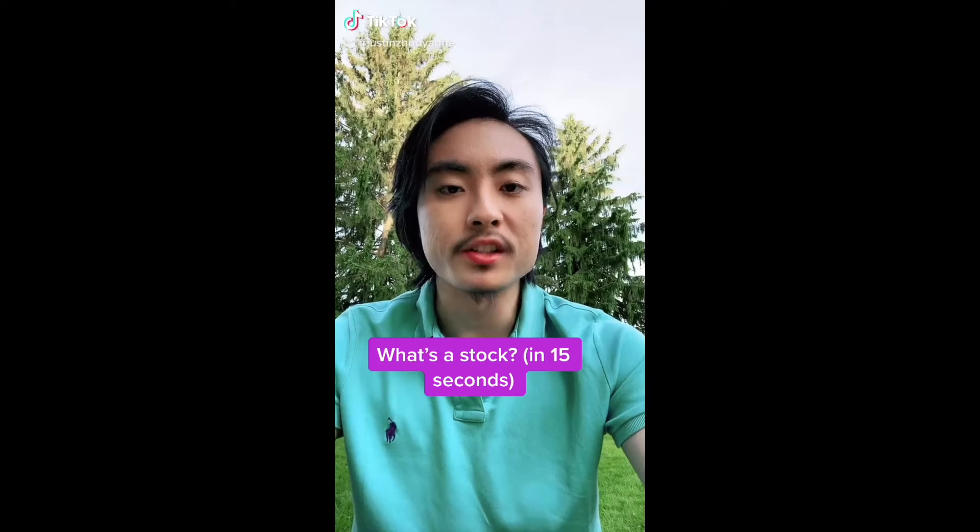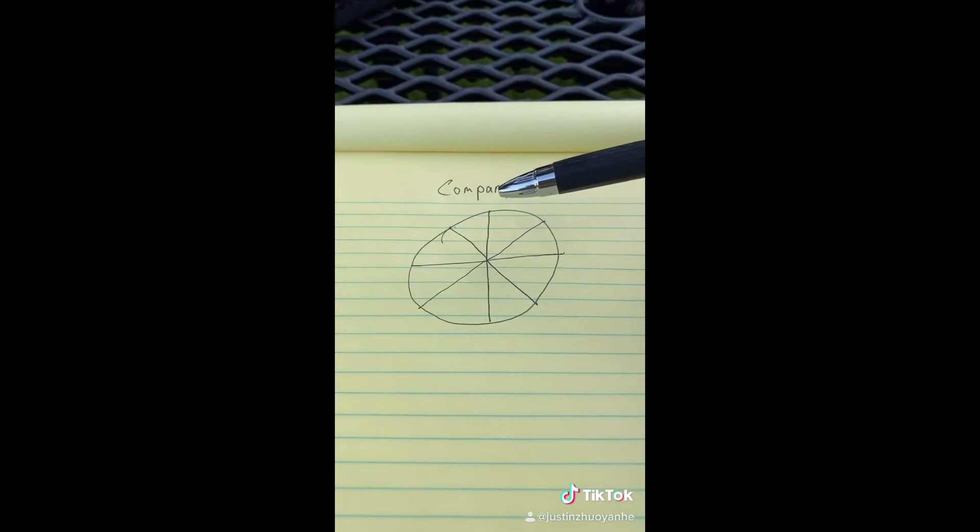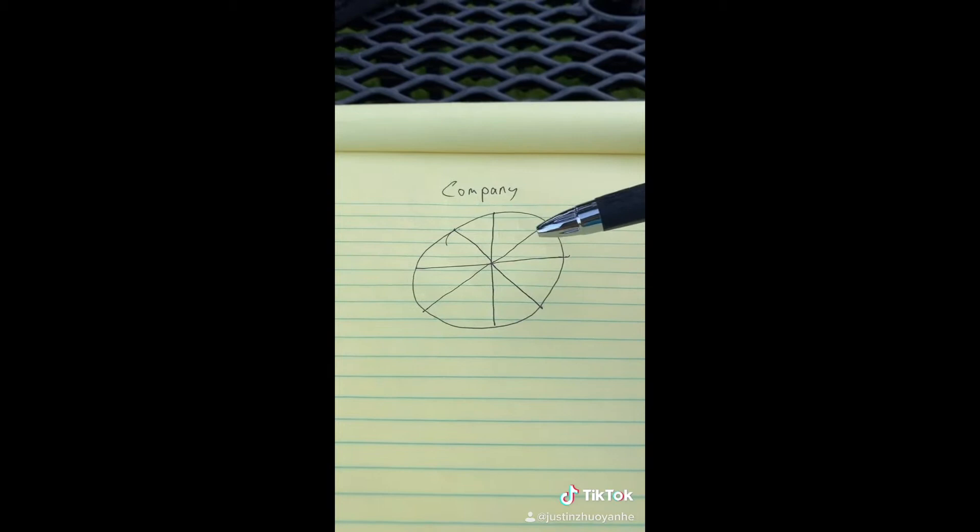What's a stock in 15 seconds? When you have a company, you can split the ownership of the company in a bunch of shares, which are also known as stocks, and you can buy and sell these in the stock market.